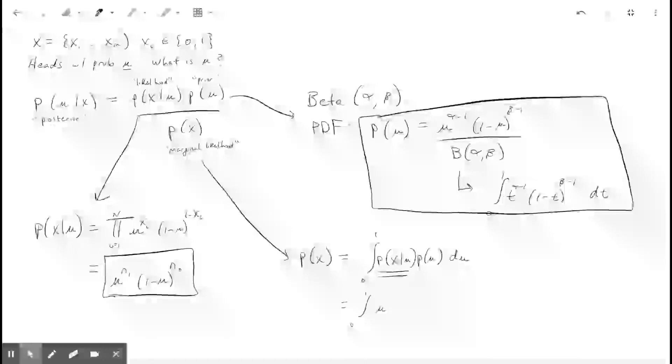So coming back down over here on the right, we can actually just rewrite this likelihood as mu to the n1, 1 minus mu to the n0. But then we need to write our prior here in the integral. And so that's going to be this guy, mu to the alpha minus 1, 1 minus mu to the beta minus 1, because remember, we're using a beta distribution for the prior.